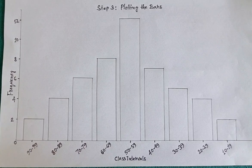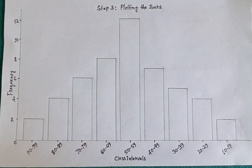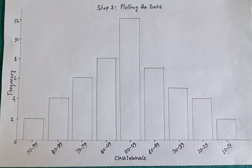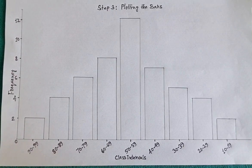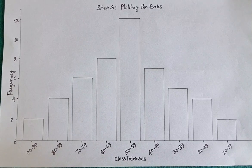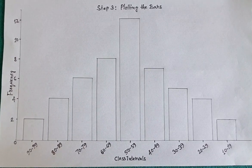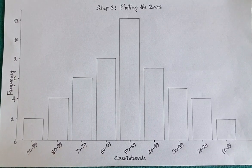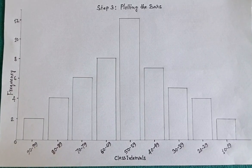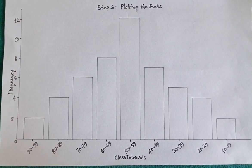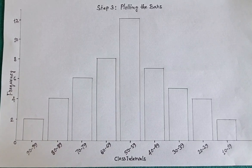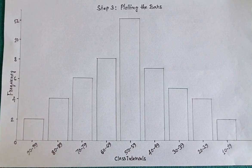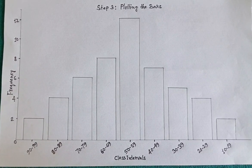Step 3: Plotting the bars. Now, let's draw the bars. For the class interval 90 to 99, the frequency is 2, so we draw a short bar at height 2. For 80 to 89, the frequency is 4, so the next bar is slightly taller.